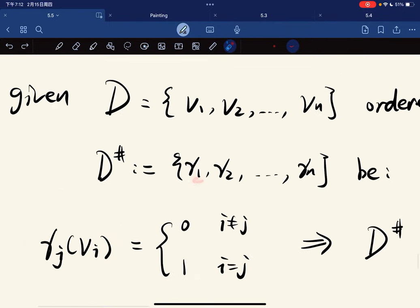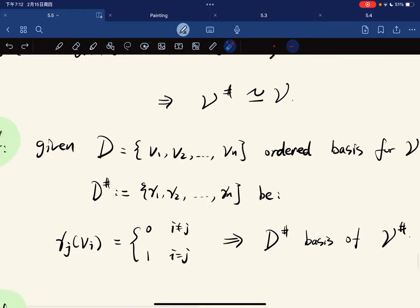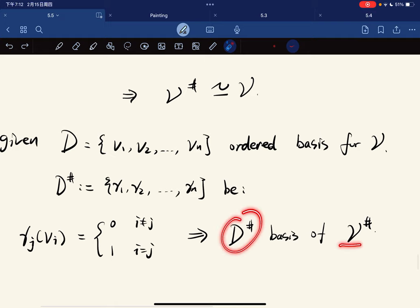Where each γ_j evaluated at v_i: if i and j are different, it gives you zero; otherwise it gives you one. It turns out that this is the basis of V*. I'll leave you to check it; it's not hard.